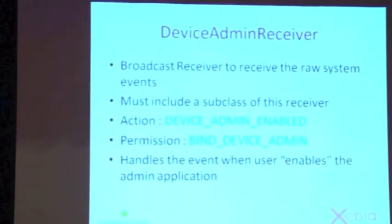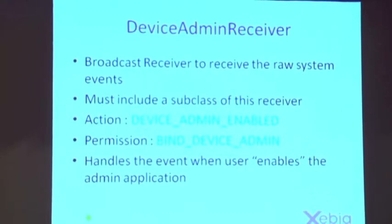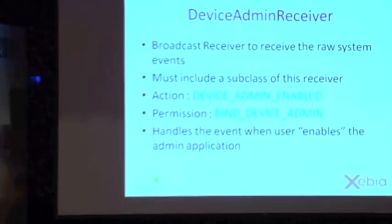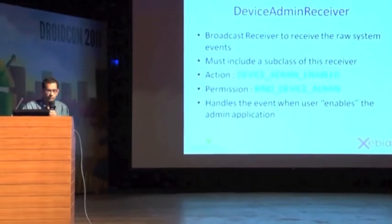For developers, there are three main API classes: DeviceAdminReceiver, DevicePolicyManager, and DeviceAdminInfo. The most important is DeviceAdminReceiver — a broadcast receiver that handles all intents related to device administration policy. It receives raw system events or intents, like enabling policies remotely or locally. You must include a subclass of this receiver in your application if you want to leverage the Device Administration API.